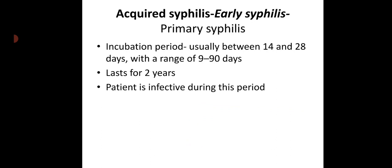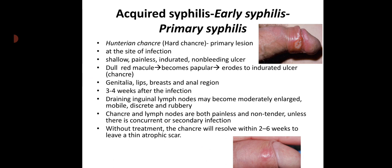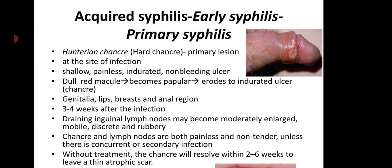In acquired early syphilis, first about primary syphilis. The incubation period is usually between 14 and 28 days, with a range of 9 to 90 days, and this stage lasts for 2 years. The patient is infective during this period. The primary lesion is called the Hunterian chancre or hard chancre. It is a shallow, painless, indurated, non-bleeding ulcer. It first appears as a red macule, then becomes papular, then erodes to an indurated ulcer called a chancre.